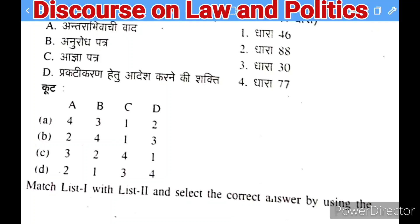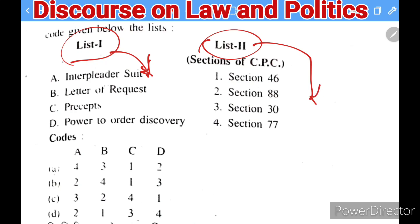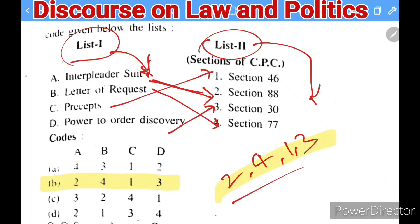Next question: match the subjects with CPC provisions. Interpleader suit — Section 88; precept — Section 46; letter of request — Section 77; power to order discovery — Section 30. The correct sequence is 2, 4, 4, 1, 3 — matching option B.